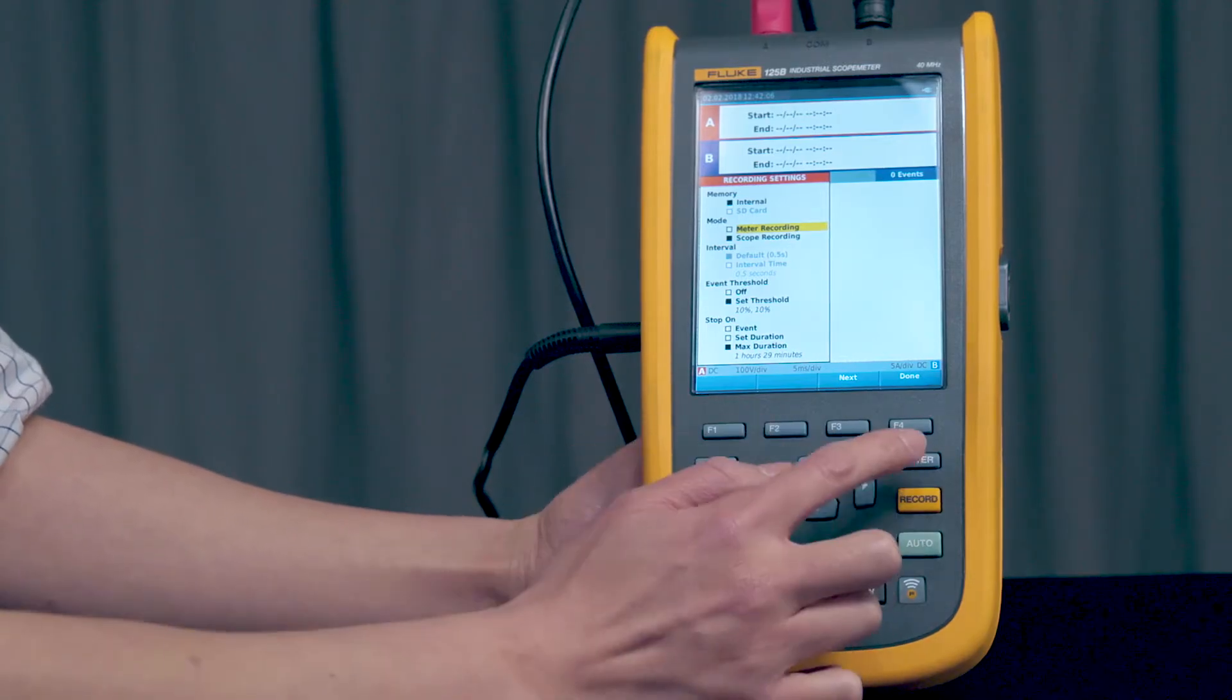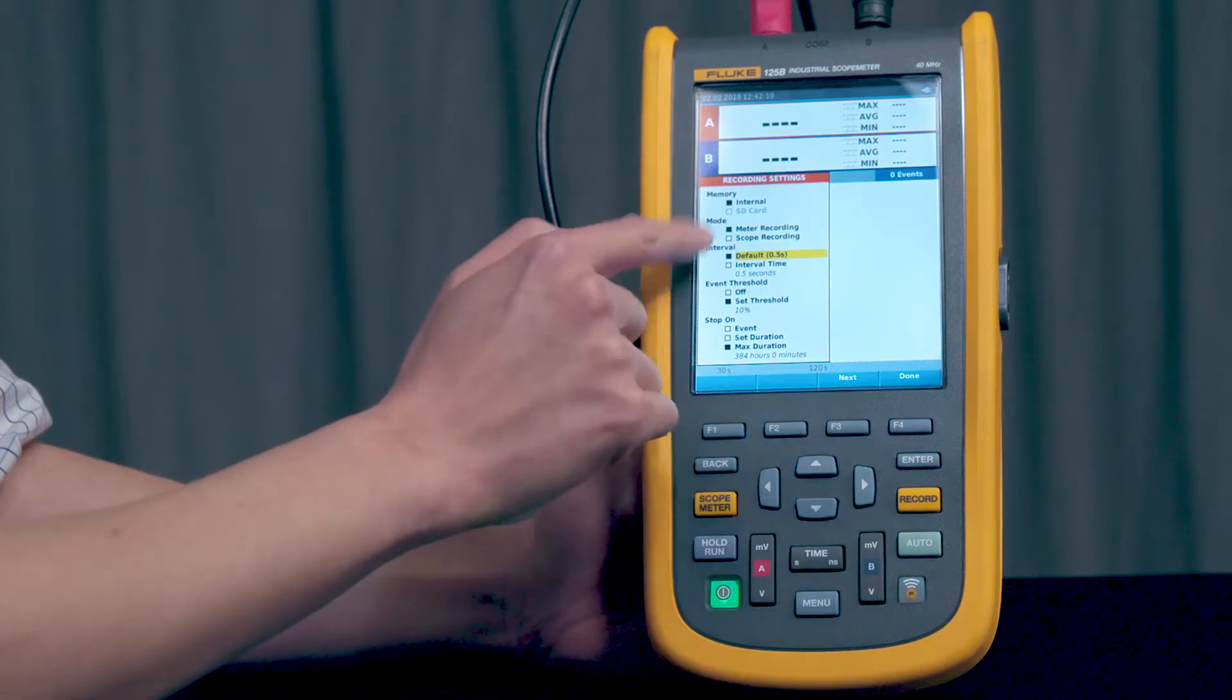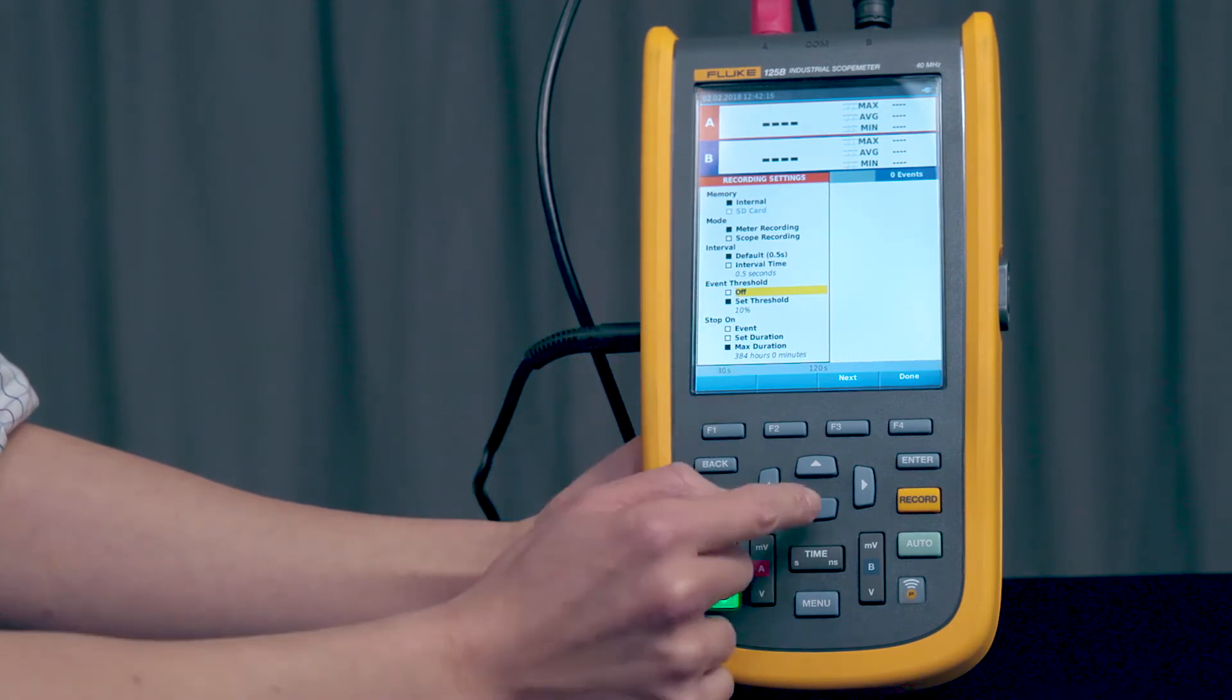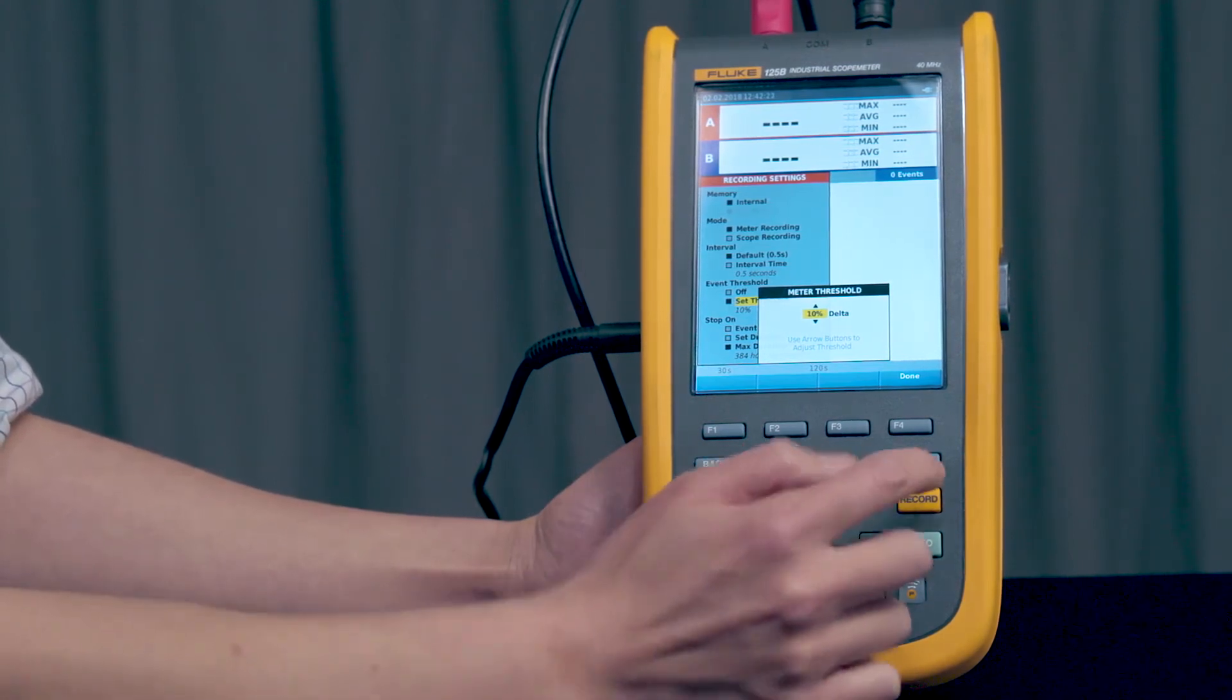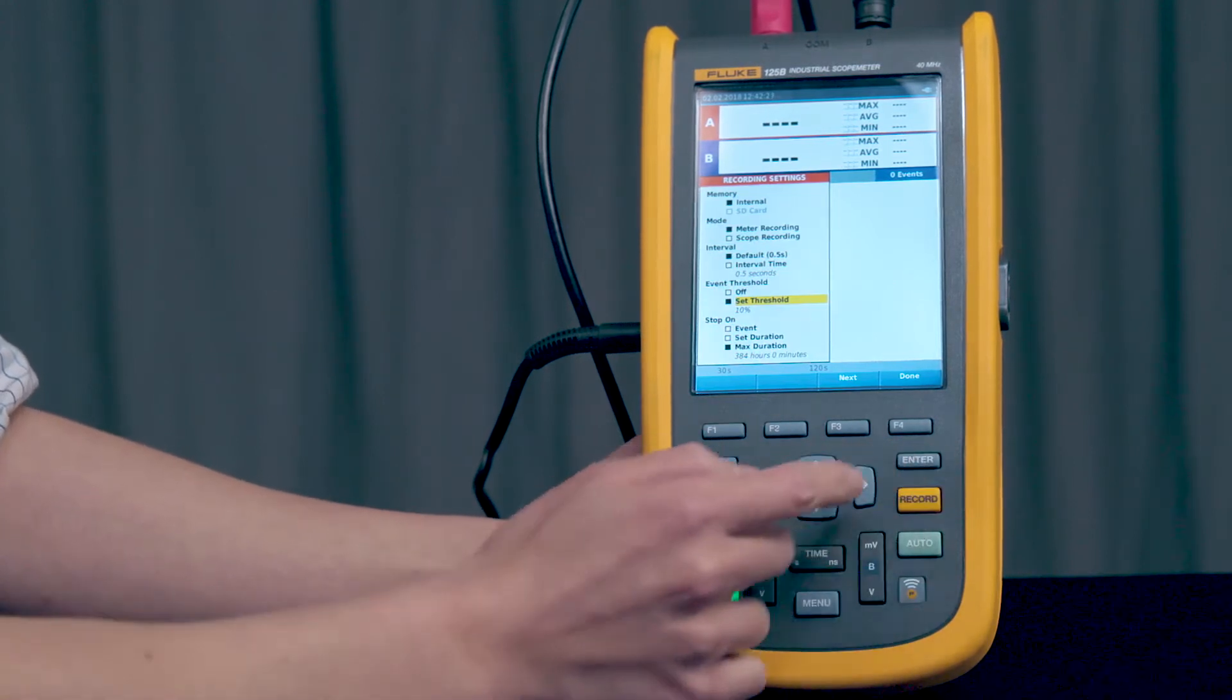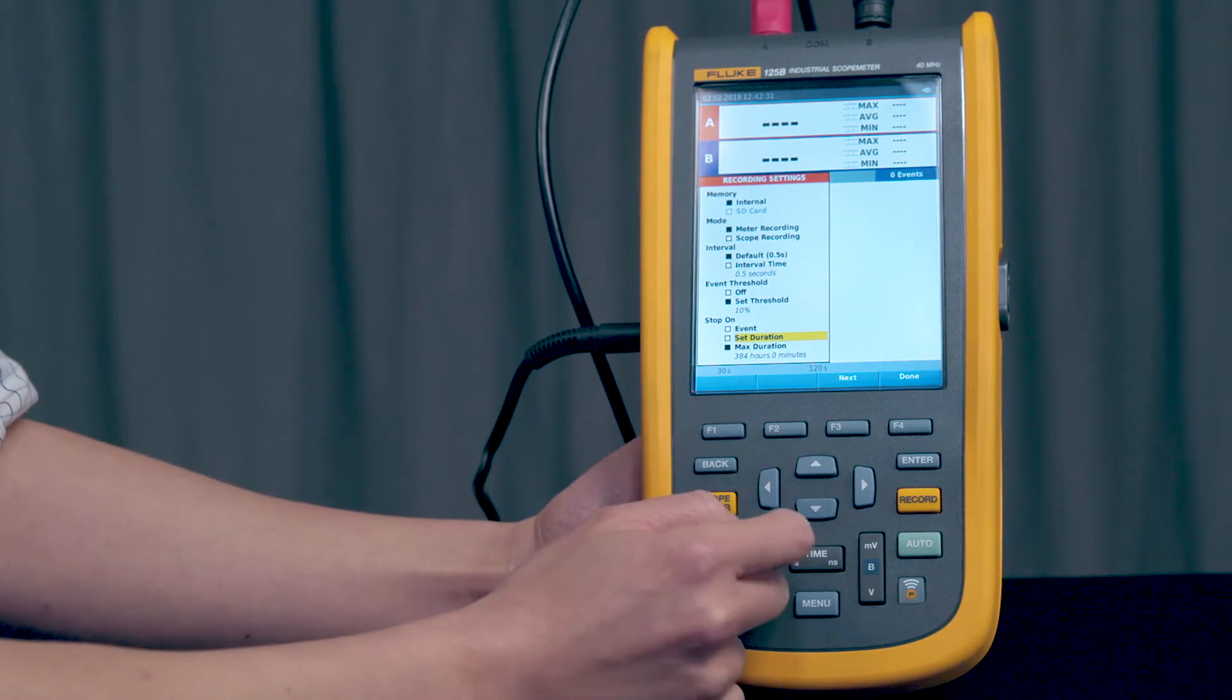In this case, let's take a look at meter recording first. We'll leave the interval at default of 0.5 seconds. And then the event threshold will set the threshold and we'll leave it at 10. If you wanted to change it, obviously, just use the up and down arrows. Now we're going to set it to max duration for this demo.